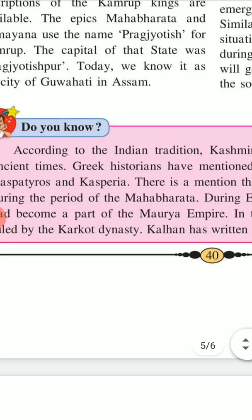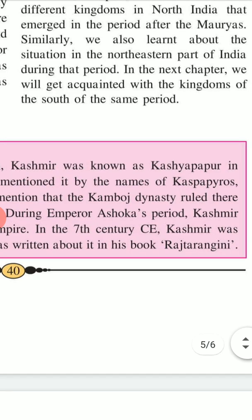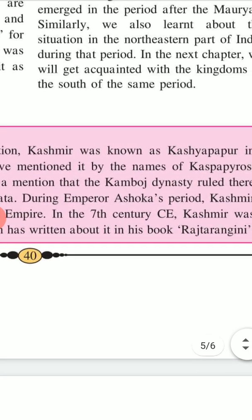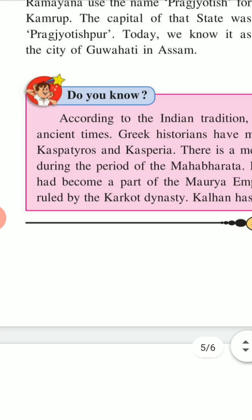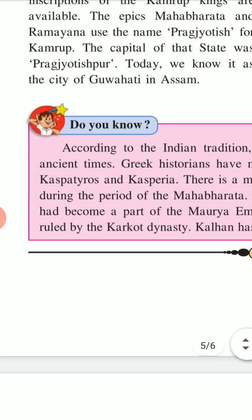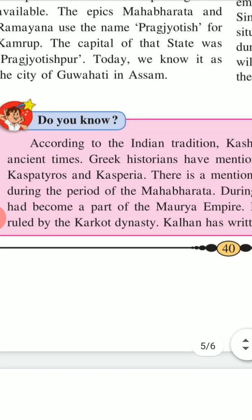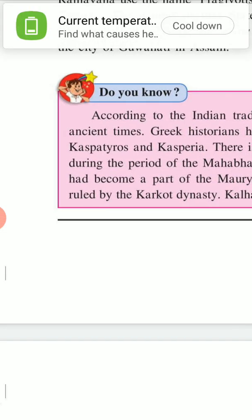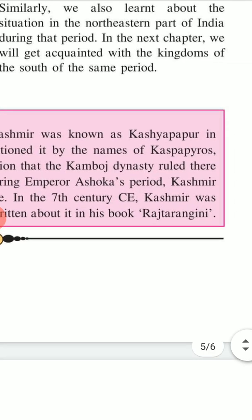Do you know? According to Indian tradition, Kashmir was known as Kashyapmar in ancient times. Greek historians have mentioned it by similar names. There is a mention that the Naga dynasty ruled there during the period of the Mahabharata. During the period of Emperor Ashoka, Kashmir had become a part of the Maurya empire. In the 7th century, Kashmir was ruled by the Karkota dynasty. Kalhana has written about it in his book Rajatarangini.